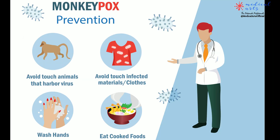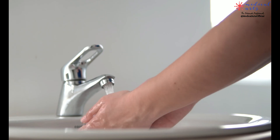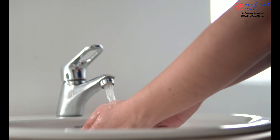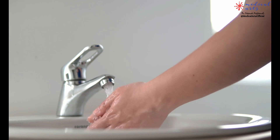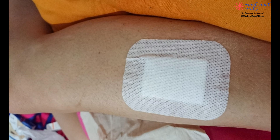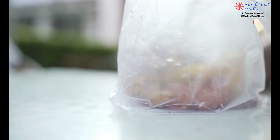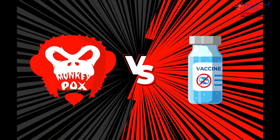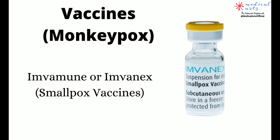Prevention: suspected cases should be instructed to limit their contact until test results are obtained, and practice frequent hand and respiratory hygiene. Lesions should be covered whenever possible, and contaminated objects should be manipulated by the case only. There is no dedicated monkeypox vaccine, but smallpox vaccination can provide cross-reactive immunity to monkeypox infection.